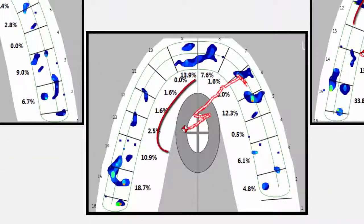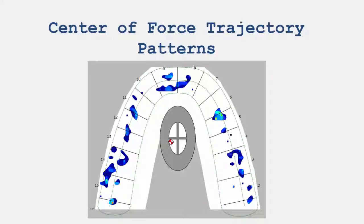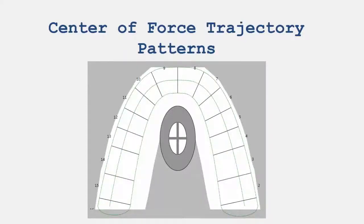The trail left behind the marker is called the center of force trajectory. Based on how the center of force moves during the closure, the dentist can get an idea if the patient's bite is well-balanced or where the occlusion may need improvement.